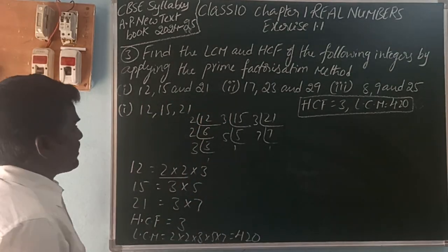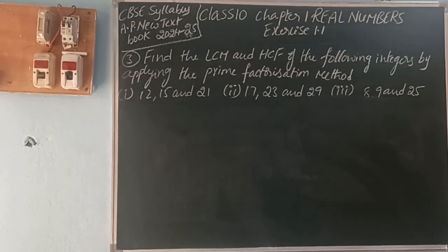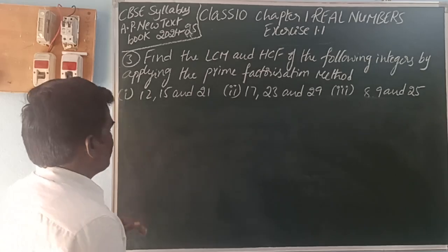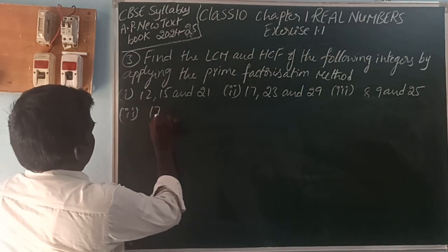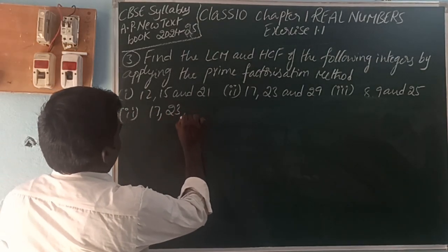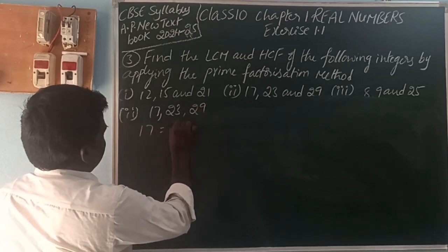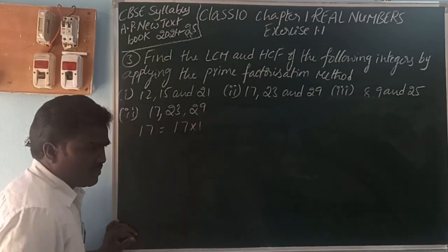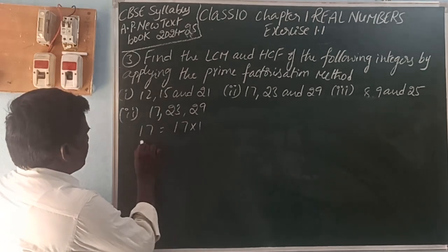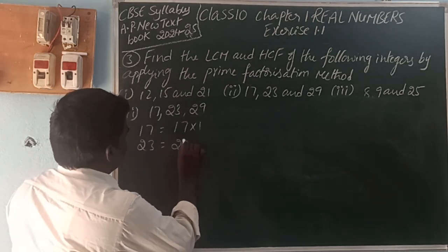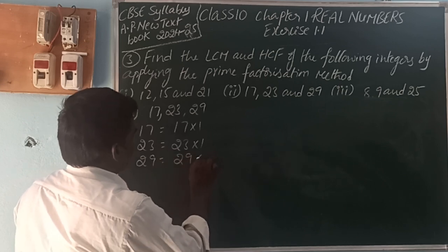Second problem: numbers are 17, 23, and 29. So 17 can be written as 17 into 1. There are no other factors for 17. 23 can be written as 23 into 1. 29 can be written as 29 into 1.